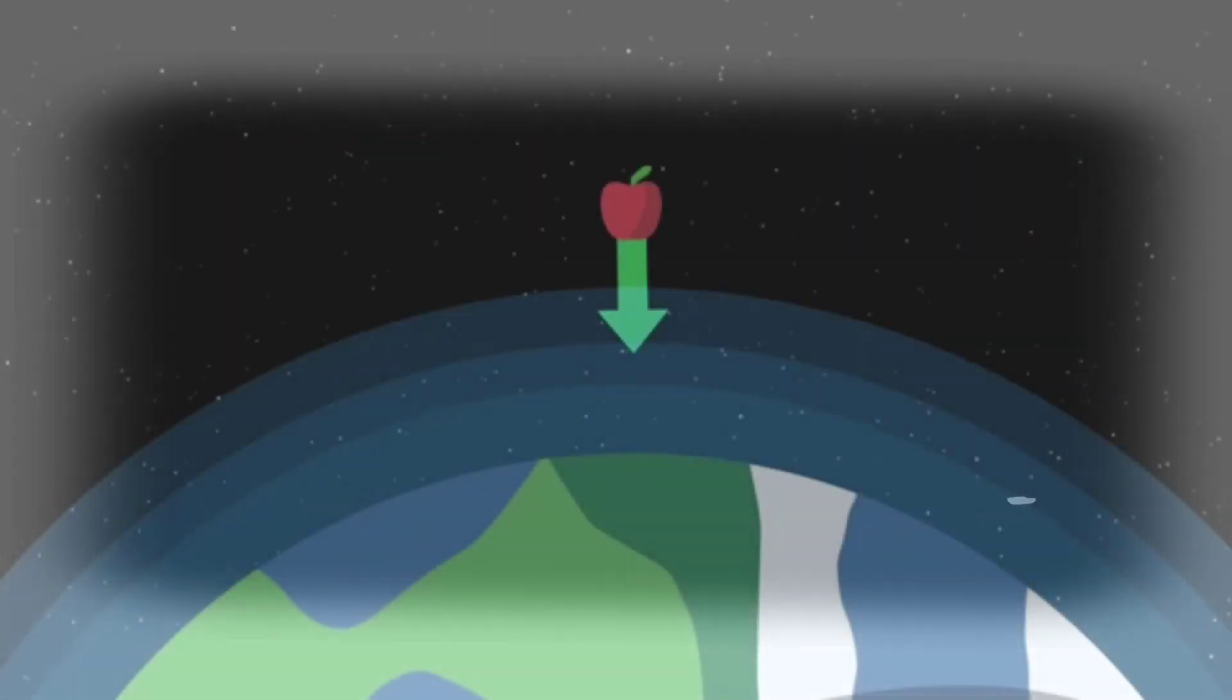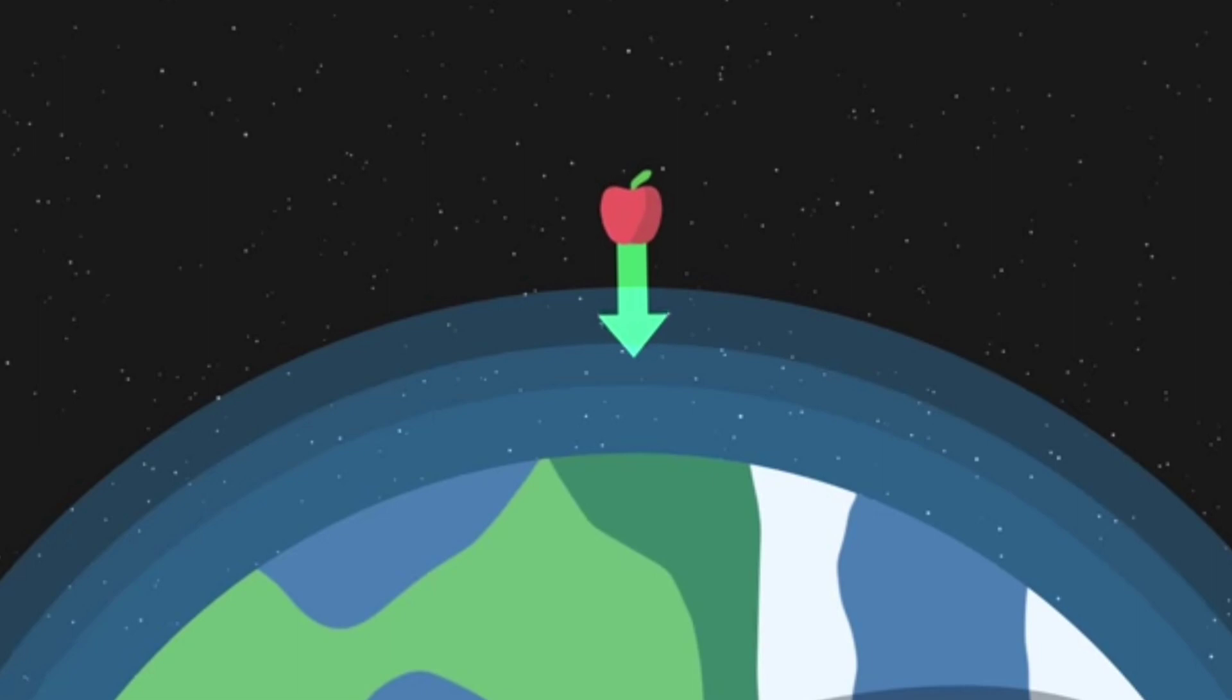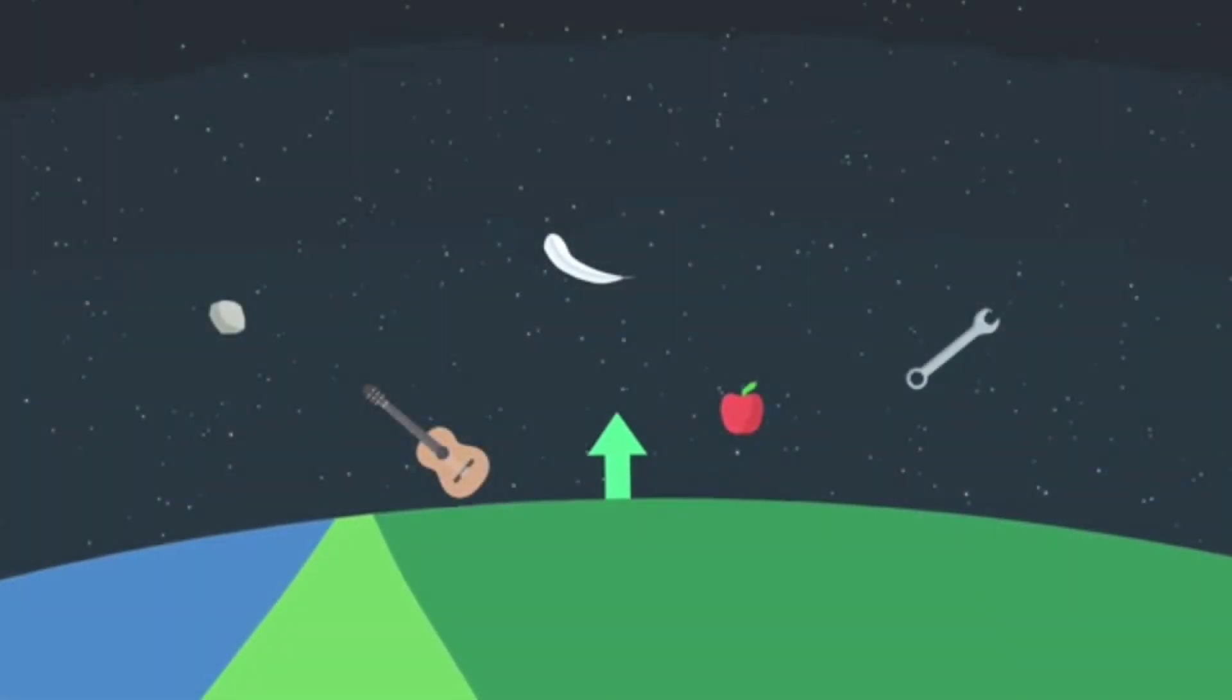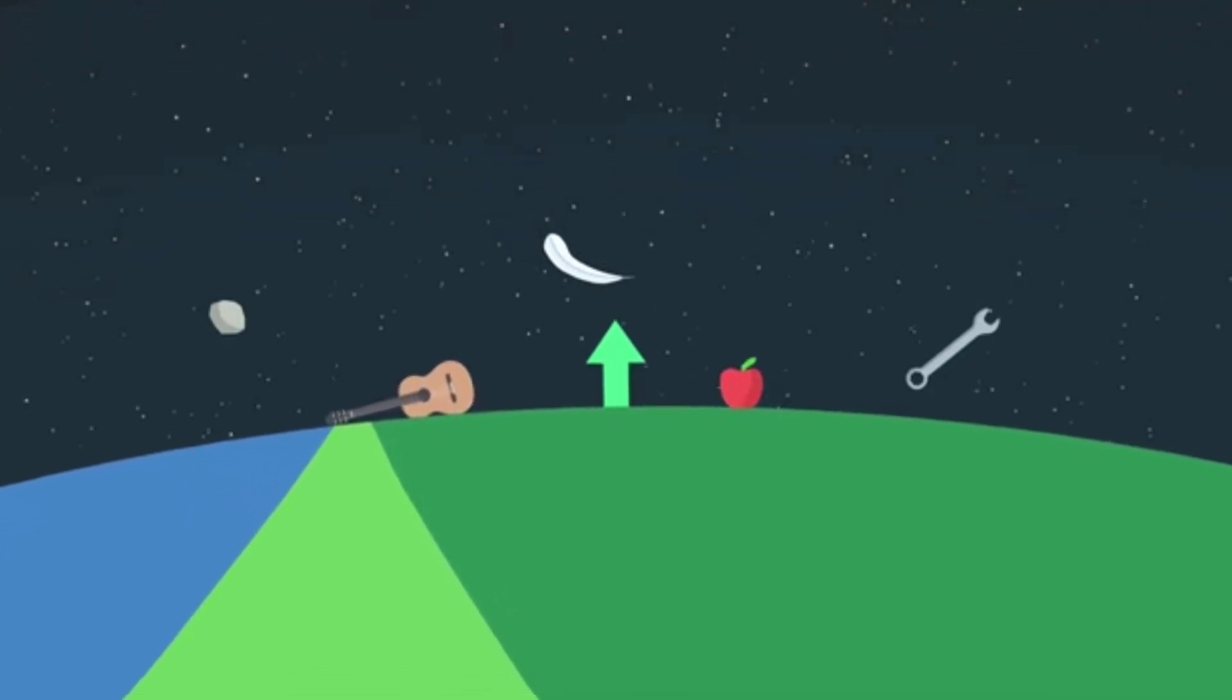As we know, when an apple is falling down, it accelerates downwards to the surface. But Einstein said, wait, wait, wait. The apple is not accelerating to the surface, but the surface itself is accelerating upwards.